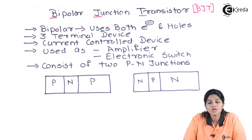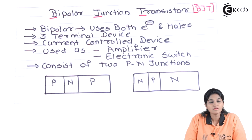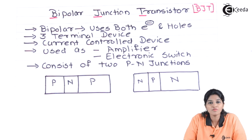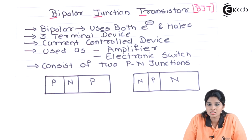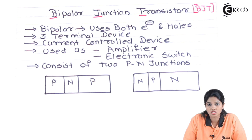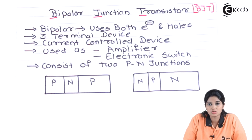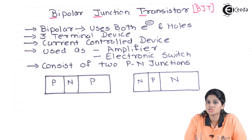We know that semiconducting materials are of two types, that means P-type and N-type. If these two semiconducting materials are combined together, they perform many functions and provide many devices. We cannot use the semiconductor materials separately, but when they combine, they form a device or P-N junction that is nothing but a diode, which can be used as a rectifier, clippers, clampers and many more applications. Another important application of P-N junction is nothing but bipolar junction transistor, that is BJT.